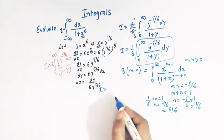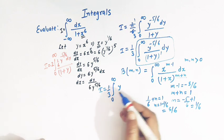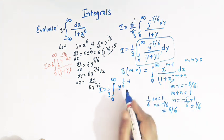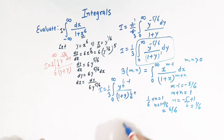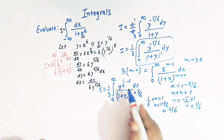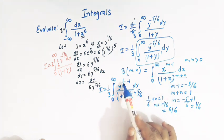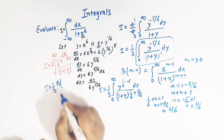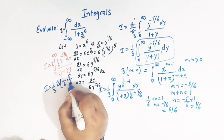So now this integral I can be written as 1 over 3 times the integral from 0 to infinity of y raised to 1 over 6 minus 1 over 1 plus y raised to 1 over 6 plus 5 over 6, times dy. This integral is exactly of the beta function form with m equal to 1 over 6 and n equal to 5 over 6. So I is equal to 1 over 3 times beta of 1 over 6 comma 5 over 6.